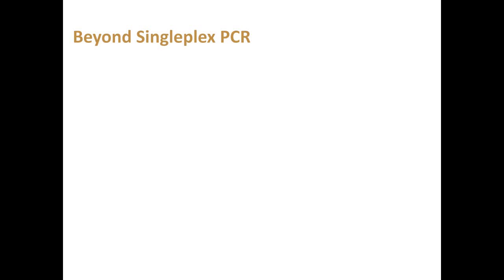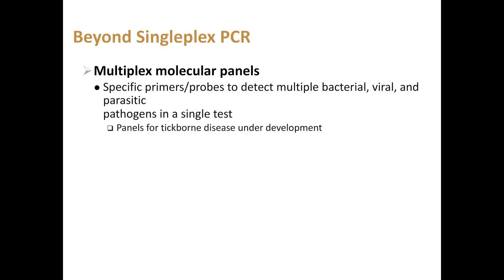We've been discussing single-plex PCR looking for a single organism, but ticks can be infected with multiple organisms that they can transmit to humans. It would be preferable to detect everything a person could get from a single tick bite. Multiplex molecular panels — with multiple primers and sometimes probes — can detect a number of organisms sharing a common clinical presentation or exposure risk. Tests FDA-approved or cleared for gastrointestinal disease, meningitis, encephalitis, positive blood cultures, and respiratory pathogens already exist. Currently there are no panels for tick-borne disease available commercially, but some are under development — I think in the next five years we'll see commercially available FDA-approved panel tests for tick-borne diseases.